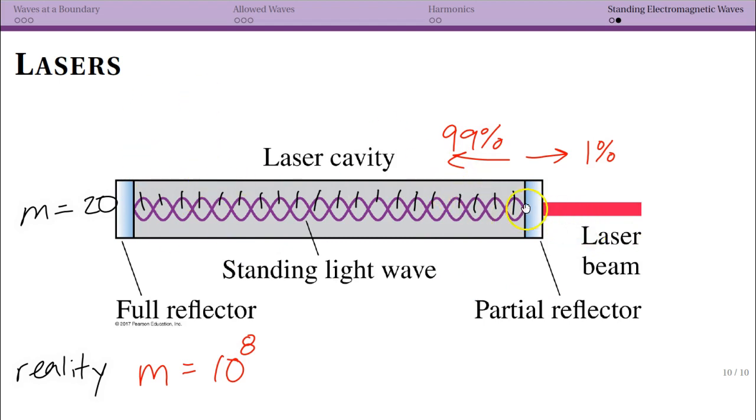So again, recognize here that the physics of the standing wave is really the same. What's important is that at the boundary, you have to have a node. That's really what's in common here between how light is hitting the mirror or a string hitting a wall.